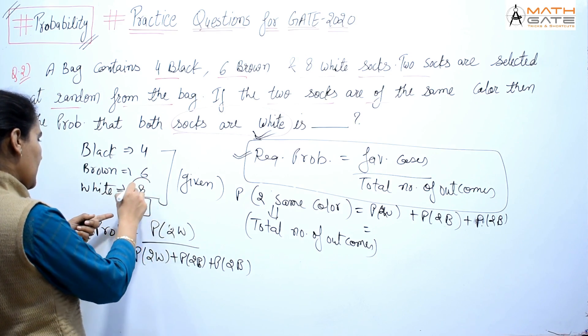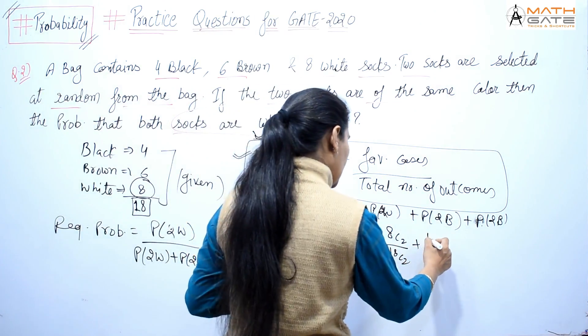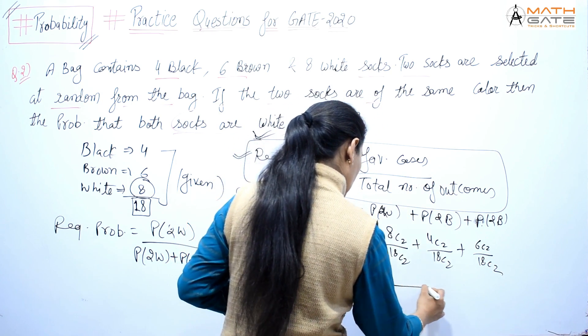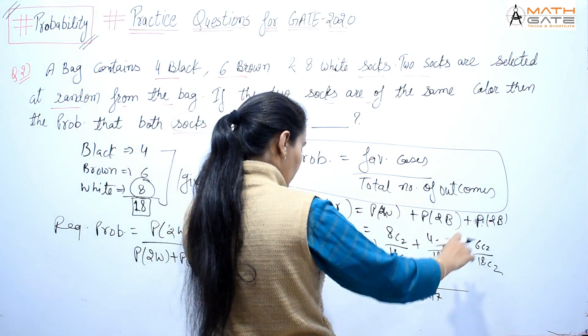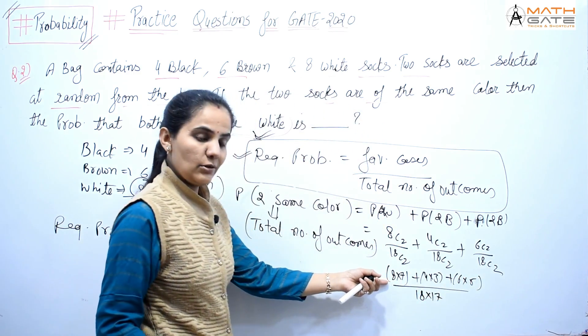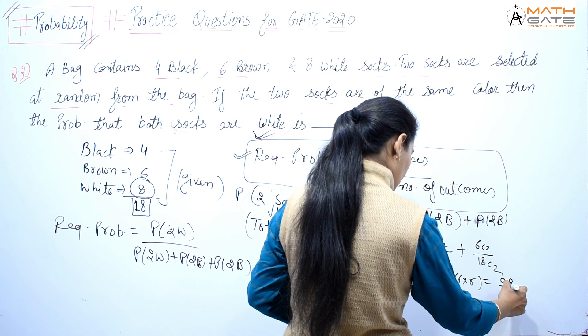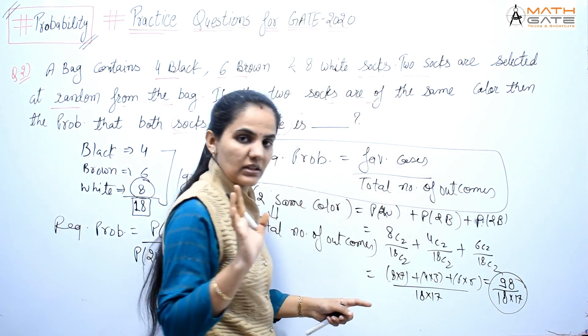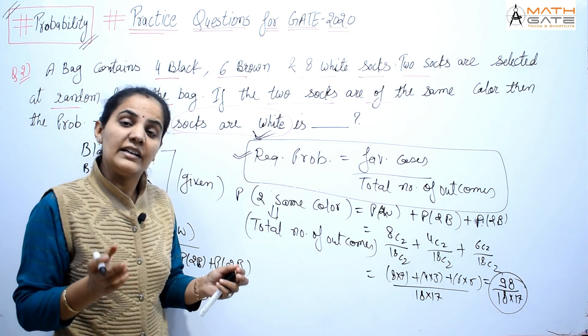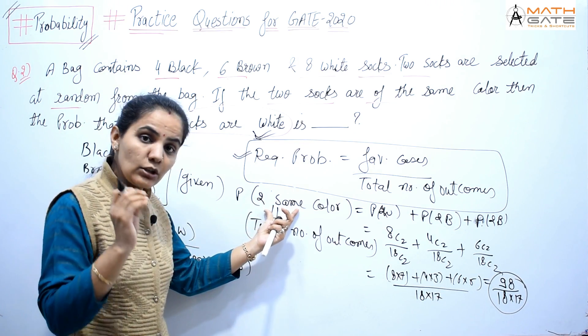Now let's solve. Two white probability: white is 8, so 8 select 2, this is 8C2 by 18C2 total. Two black probability: 4C2 by 18C2. And two brown probability: 6C2 by 18C2. 18C2, I'll write below: 18C2 means 18 into 17 by 2 into 1. It will cancel from above, 2 into 1 here. 8 into 7 plus here 4 into 3 plus here 6 into 5. 8 into 7 is 56 plus 12 plus 30. When you solve: 56 plus 12 plus 30 is how much? 98 by 18 into 17. This is how much you have - total number of outcomes.